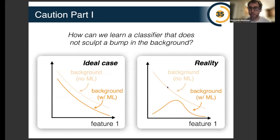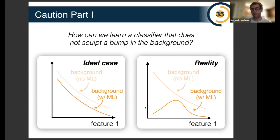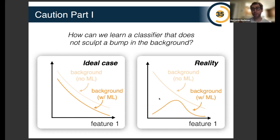There are some cautionary tales. When we train these classifiers, it's often not good enough to train them in an uncontrolled way. For instance, in a bump hunt, you might have a steeply falling background and train a classifier using a bunch of other features, apply a cut, and ideally the background is still steeply falling. But in reality the classifier is smart — it can learn correlations between the feature you're bump hunting on and your other features and can sculpt bumps, so the background-only case can still produce fake bumps.